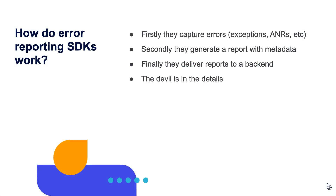Very broadly, error reporting SDKs work by firstly capturing a source of errors — that could be an uncaught exception or something like an ANR where you've blocked the main thread for about five seconds. Once you've got that error source, you want to generate a report from it — grab the stack trace so you can figure out where the offending piece of code is, and also grab some metadata. For instance, you might be encountering a crash on a certain device manufacturer like a Samsung device, and it's quite useful to have that information. Then finally you want your SDK to deliver reports to a back-end, typically by serializing some JSON and making an HTTP request. That all sounds pretty simple but the devil's a little bit in the details.